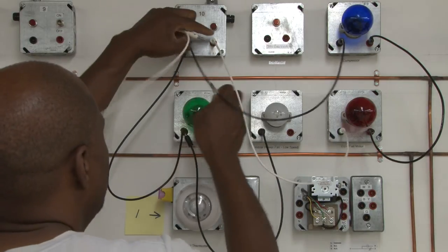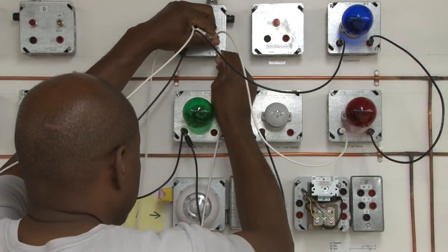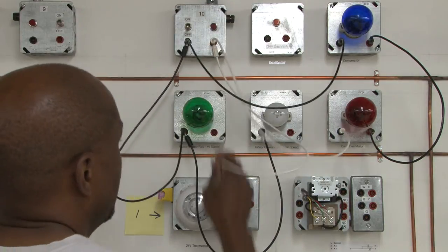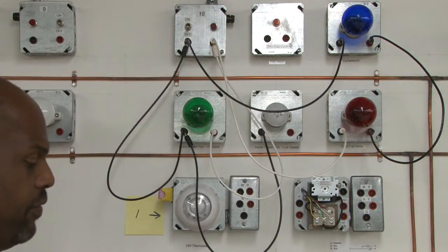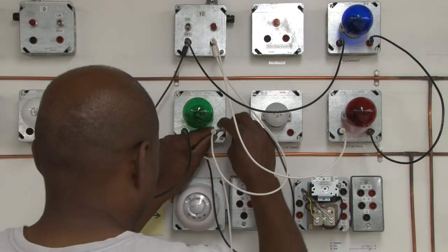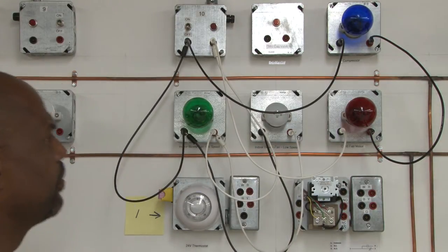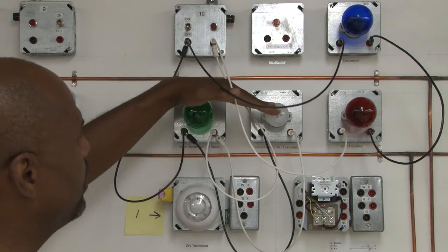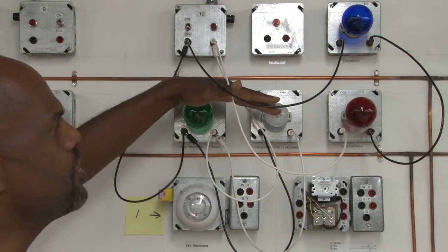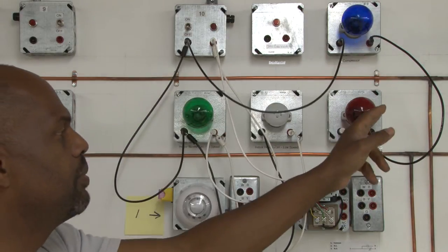Now we're going to go to the neutral side. Go into the first bulb, come out of the first bulb, and go to the second bulb. Now these two bulbs are in parallel with each other. These two bulbs are in series.